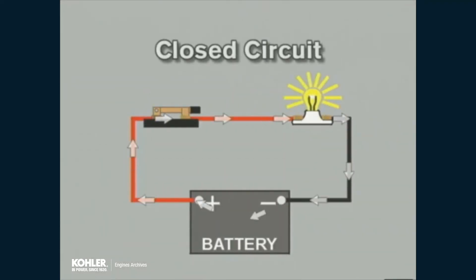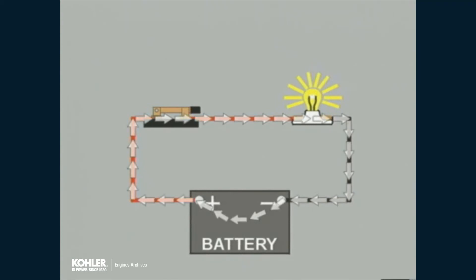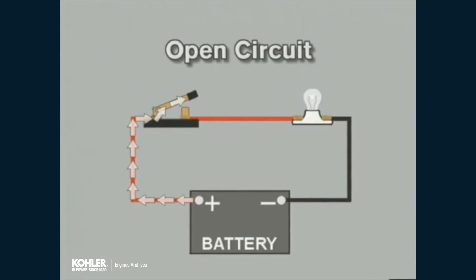A circuit with low resistance that allows current to flow easily is said to be continuous or closed. Another way it is often stated is that a closed or complete circuit has continuity. A circuit with very high or infinite resistance, such that no current flows, is an open circuit. It will not have continuity.